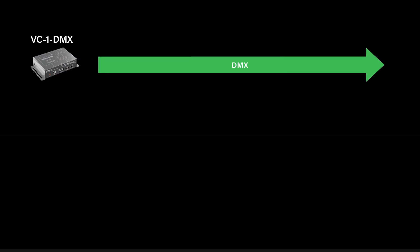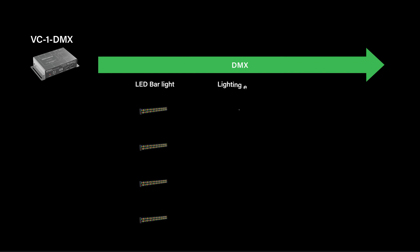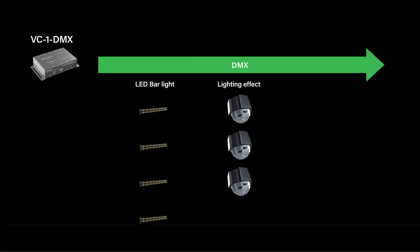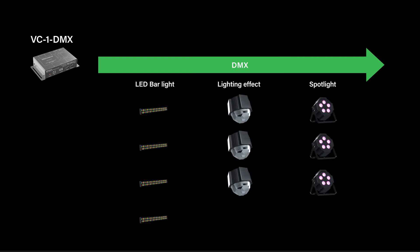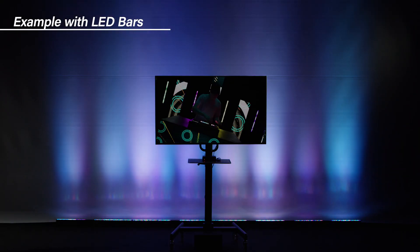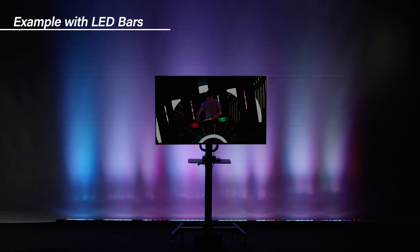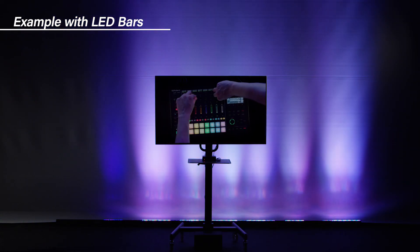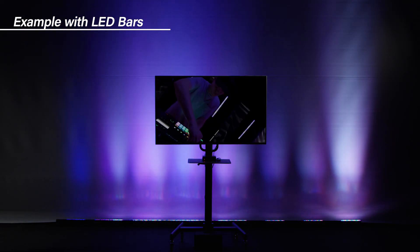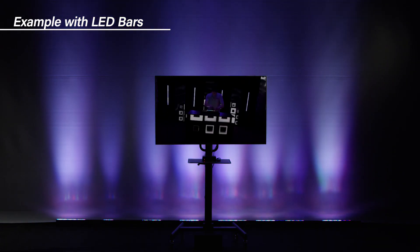Multiple devices such as LED bars and mirror balls can be daisy-chained to receive the DMX512 signal over an XLR connection. A connected LED bar will synchronize its color and intensity in real-time with the video source.